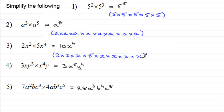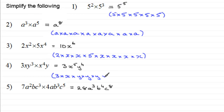For number four, three xy cubed multiplied by x to the power four times y — we got three x to the power five, y to the power four. That's because three xy cubed is short for three multiplied by x multiplied by y cubed, so that's y times y times y. Then we multiplied this by x to the power four — x repeatedly multiplied by itself four times — and then by just y. So we've got the three, then x repeatedly multiplied by itself five times over, and y repeatedly multiplied by itself four times over.